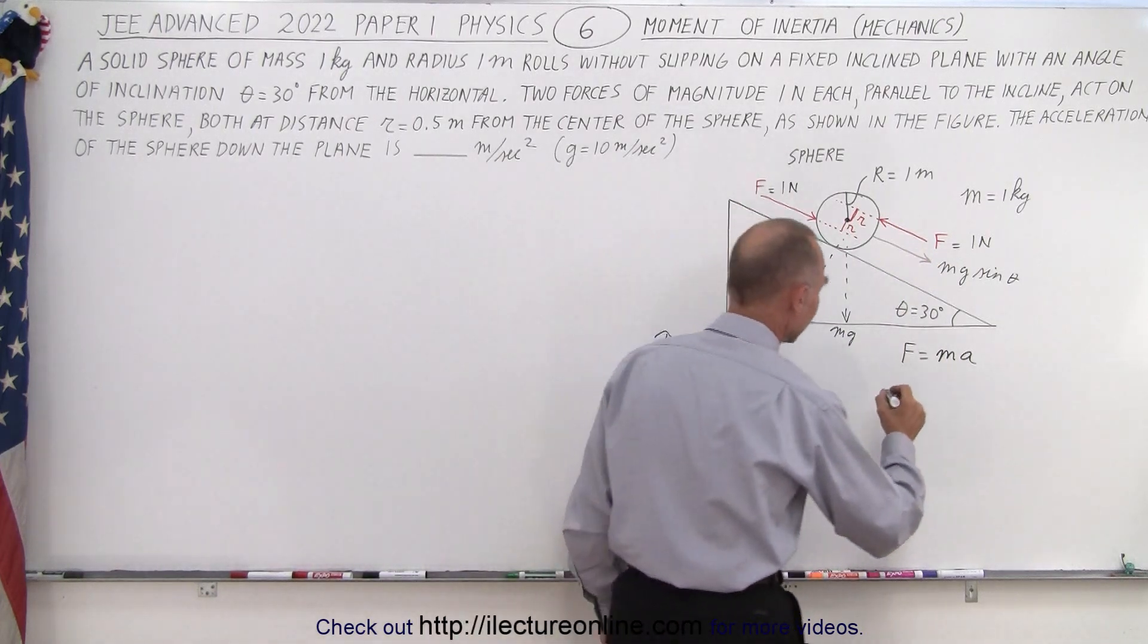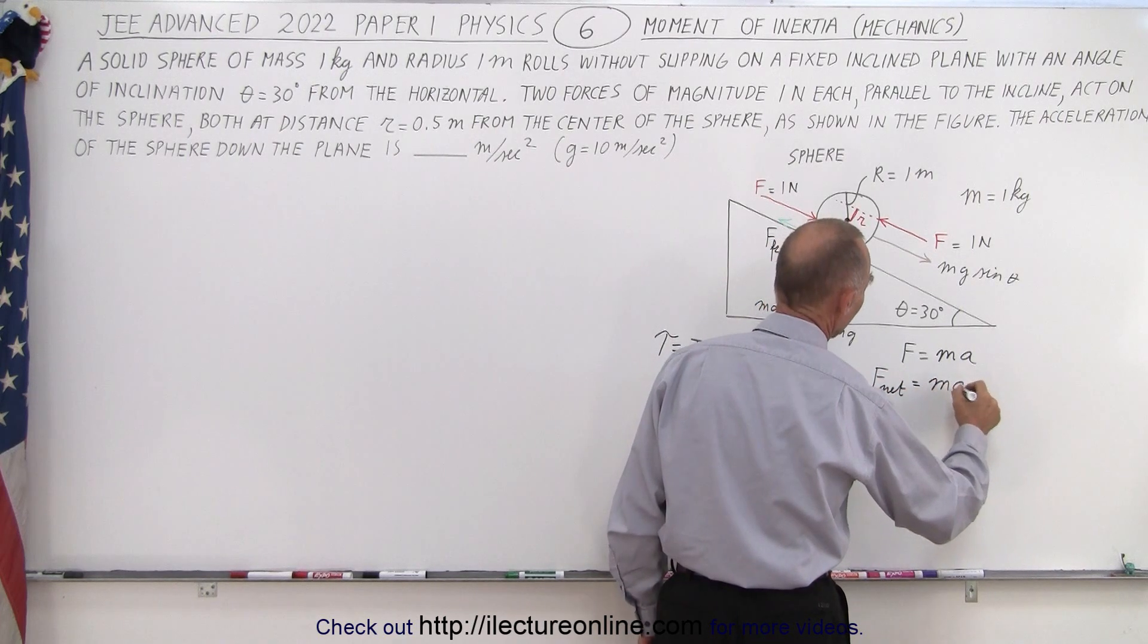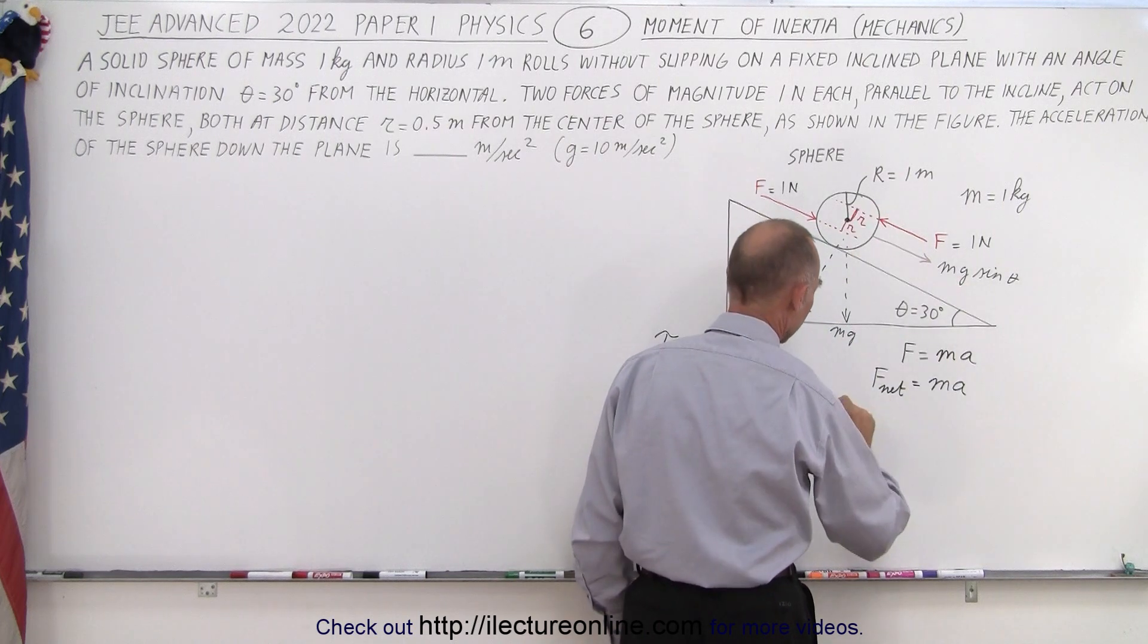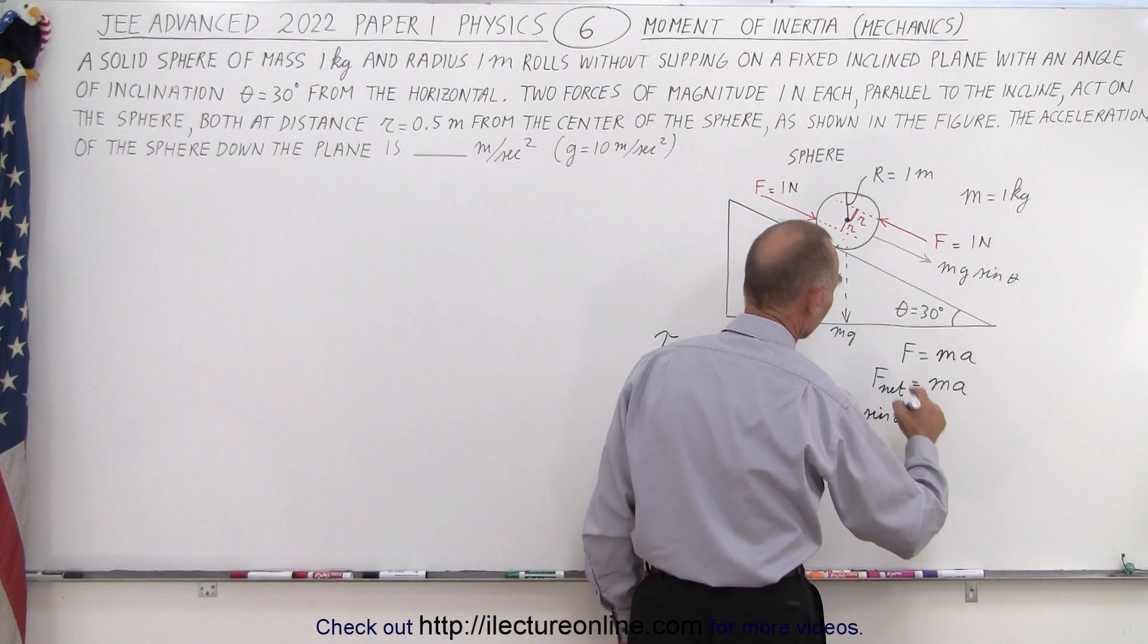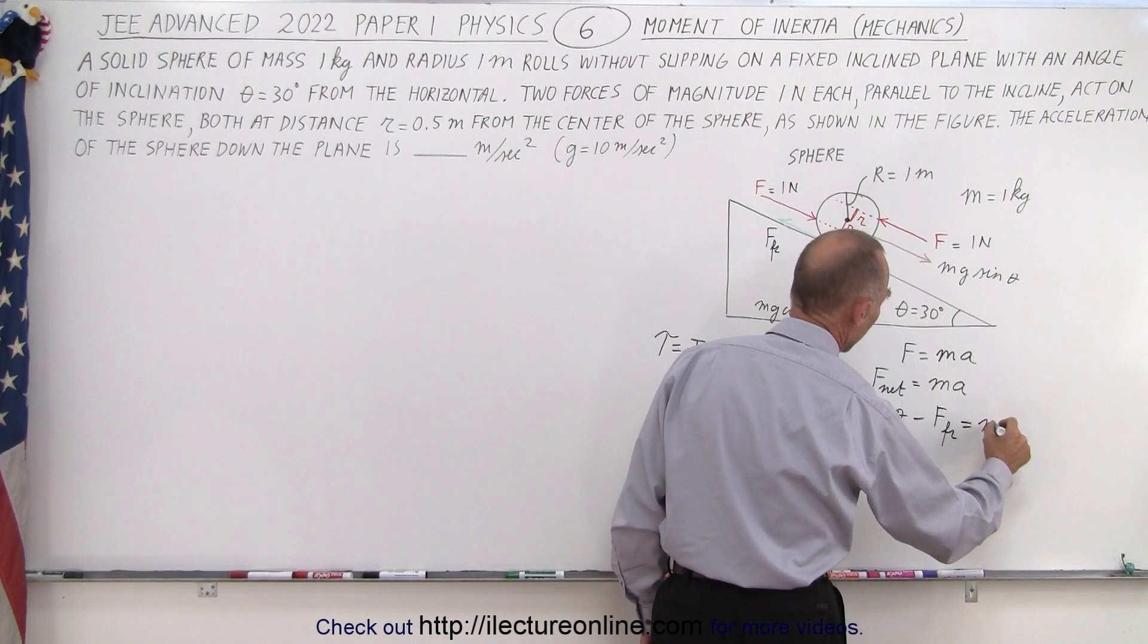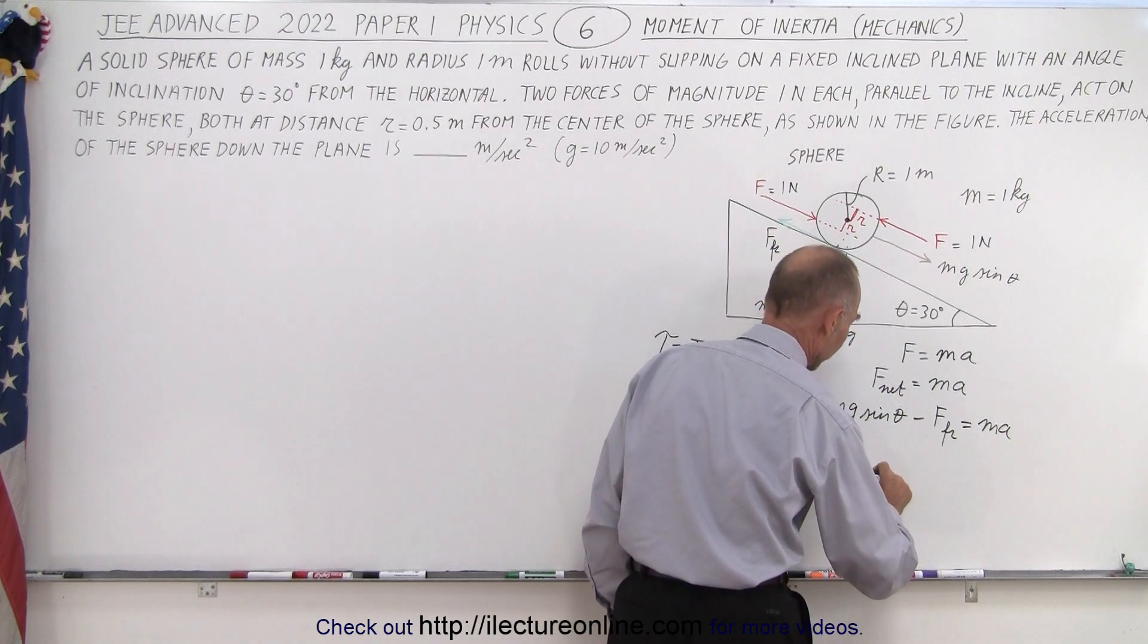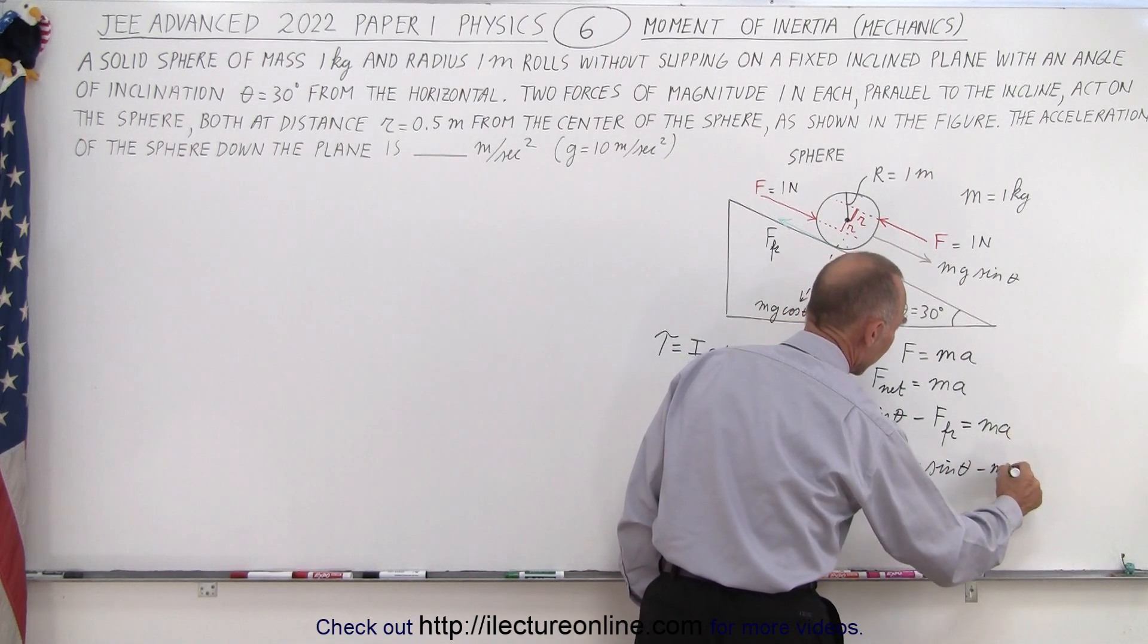So, we can say that the net force equals the mass times acceleration. And the net force is going to be the force pulling it down the incline, mg sine theta, minus the friction force. And that equals Ma. So, if we solve this for the friction force, we have the friction force is equal to mg sine theta minus Ma.